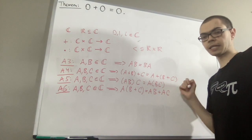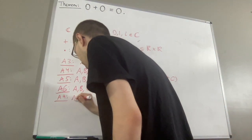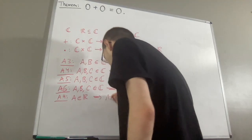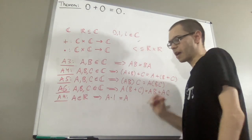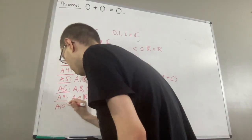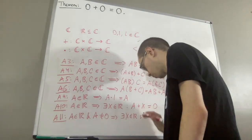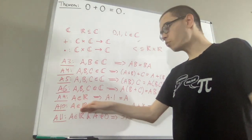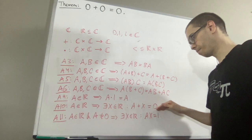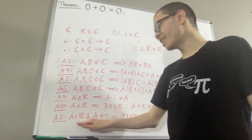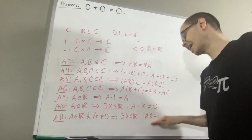And we're going to be using axioms nine, ten, and eleven. Axiom nine tells us, for any real number a, a times one is equal to a. Axiom ten tells us, given any real number a, there exists a real number x such that a plus x is equal to zero. Axiom eleven tells us, given any non-zero real number a, there exists a real number x such that a times x is equal to one.